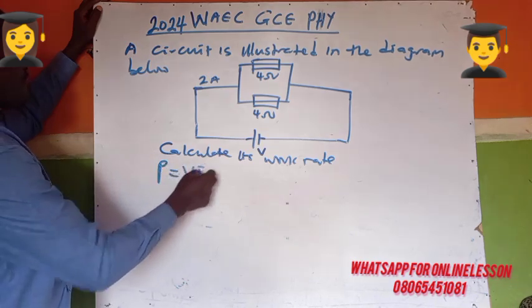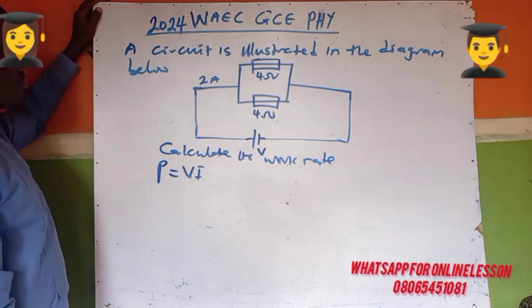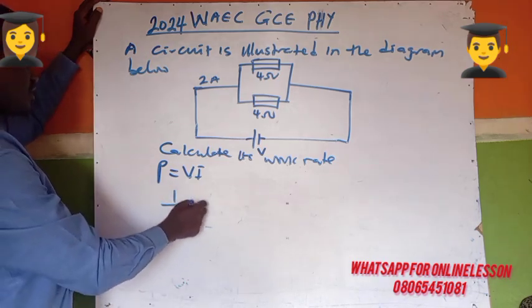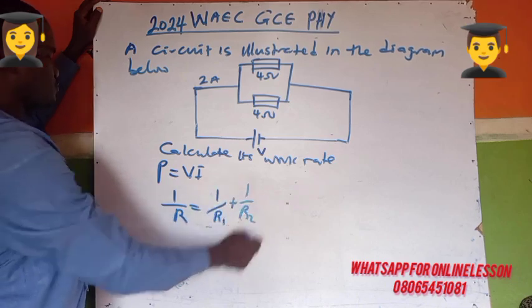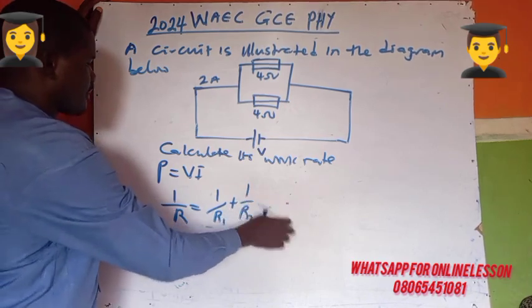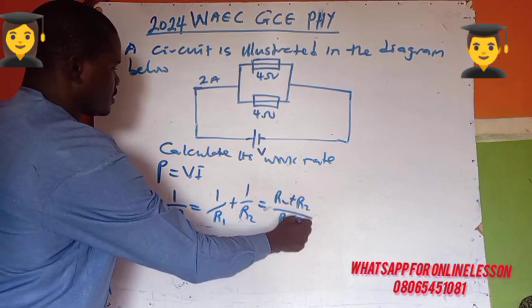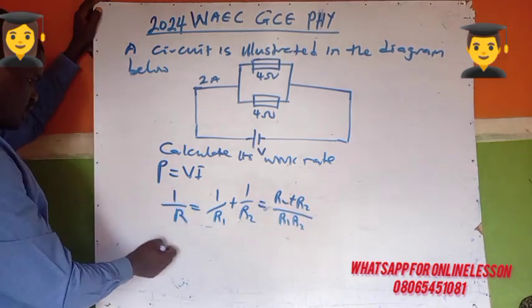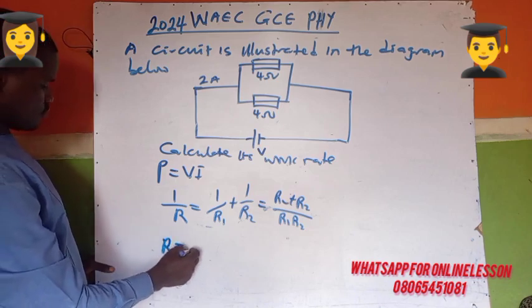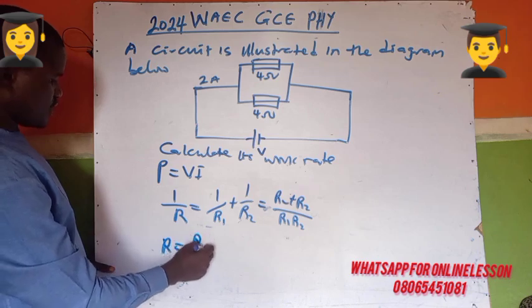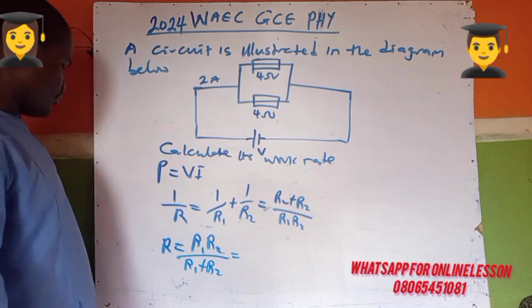Power equals P times I, so you can define it like that. Here is a parallel connection, so for the equivalent resistance you use one over R1 plus one over R2. Rearranging, you get R equals R1 times R2 over R1 plus R2.